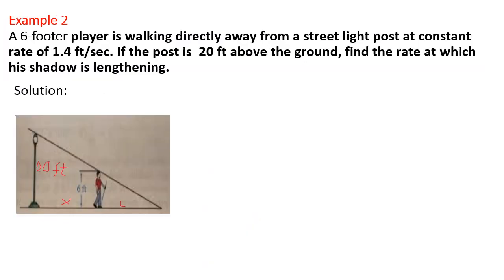A 6-foot player is walking directly away from a streetlight post at a constant rate of 1.4 feet per second. If the post is 20 feet above the ground, find the rate at which his shadow is lengthening.